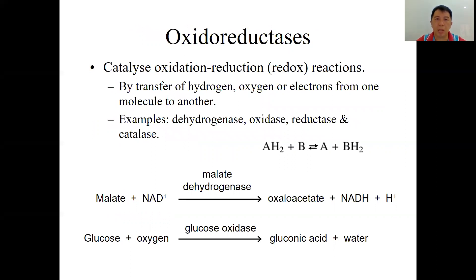Oxidoreductases catalyze oxidation and reduction reactions — we call it redox — by transferring hydrogen, oxygen, or electrons from one molecule to another. Examples include dehydrogenase, oxidase, reductase, and catalase. In a redox reaction, compound A has hydrogen atoms that are transferred to compound B, so A is oxidized and B is reduced.